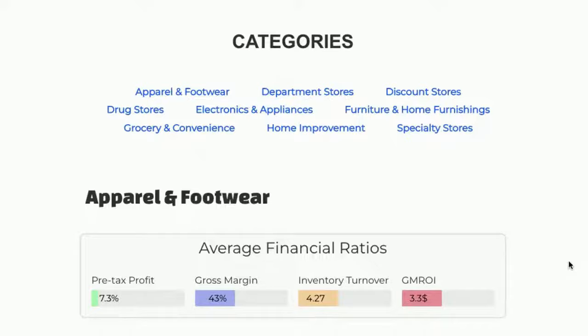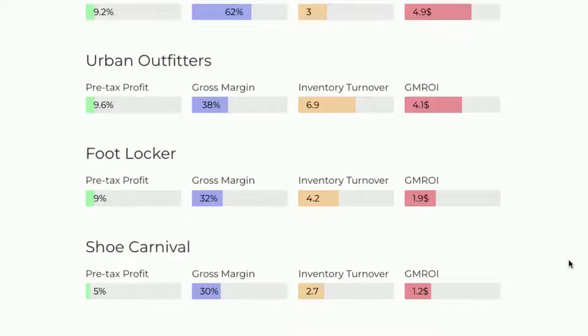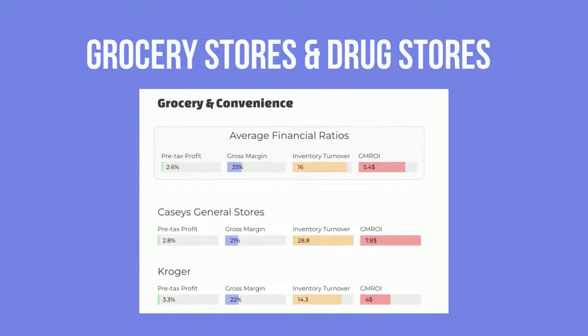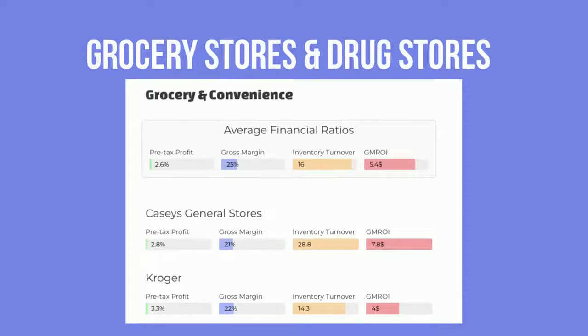What is a good inventory turnover ratio? Inventory turnover differs from one retail category to the other based on the nature of products and how fast they need to be turned. For example, you will find that supermarkets and grocery stores have high inventory turnover, usually at around 14, and the same applies to pharmacies.